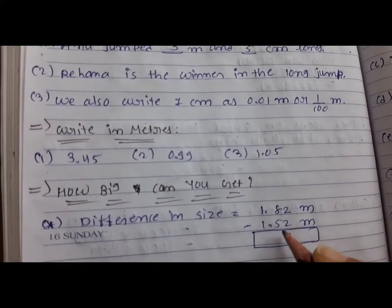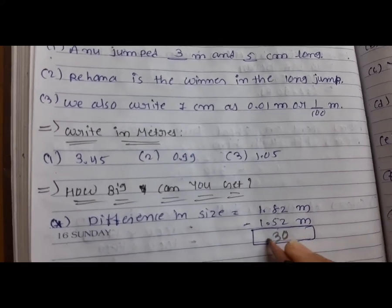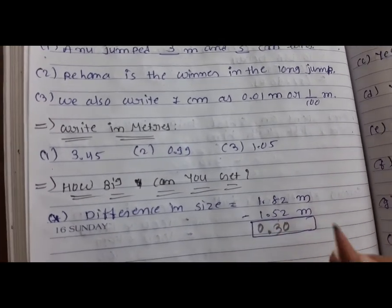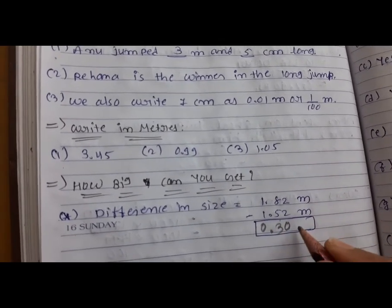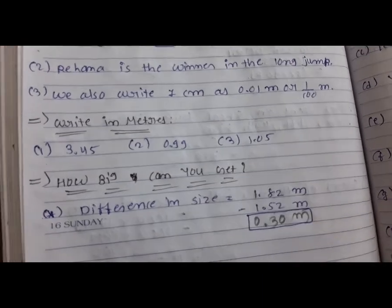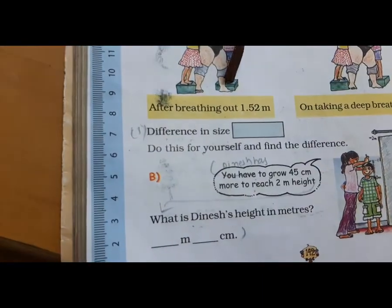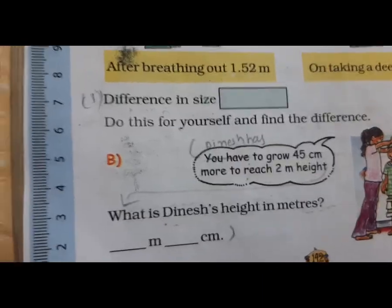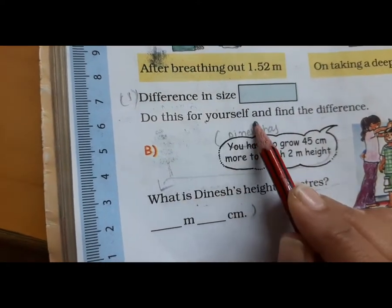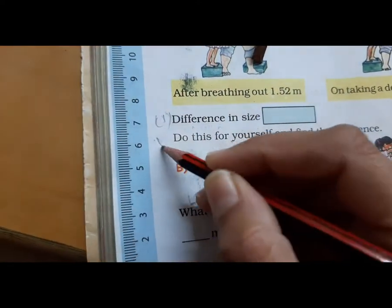8 minus 5 is 3. Here you have the decimal point. 1 minus 1 is 0, meaning the answer is 0.30 meters. Do this yourself and find the difference.